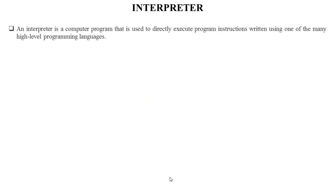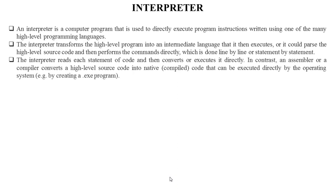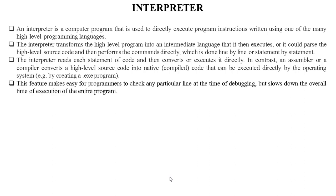An interpreter is a language processor which bridges an execution gap without generating a machine language program. An interpreter is a computer program used to directly execute program instructions written in one of many high-level programming languages. The interpreter does not perform any translation of the source program; instead, it performs analysis on the source program statement by statement and itself carries out the action implied by each statement. The main advantage is the elimination of compilation overhead. However, this slows down the overall execution time of the entire program.